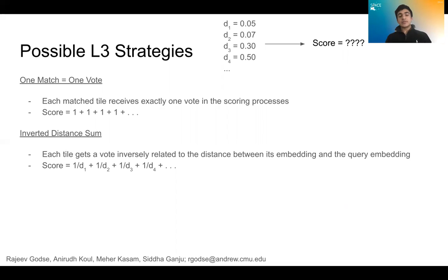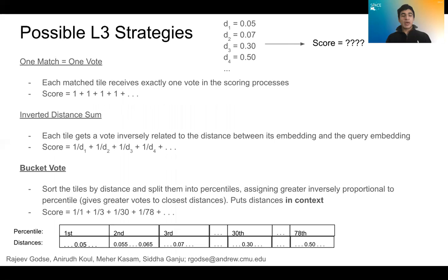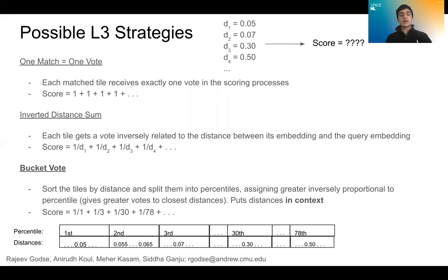One strategy would sum up the inverses of the distances between the embeddings of matched tiles. This rewards close matches, but doesn't put distances in context to other matches and might over-reward tiles marginally closer at low distances. The strategy we settled on was a bucket vote. It found a sorted list of all distances at a resolution, then gave each tile a score inverse to the percentile in which its distance lay — creating an inverse relationship between distance and score, and measuring each match's strength relative to the field of matches.